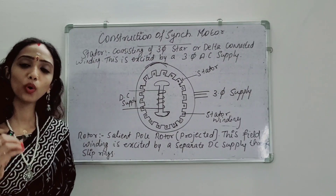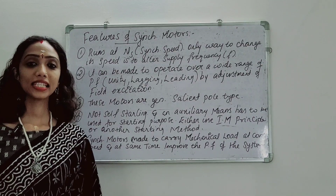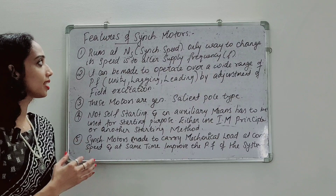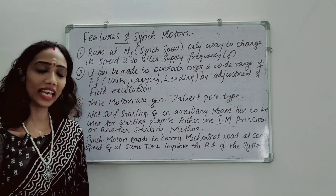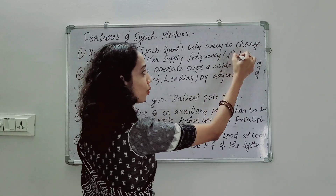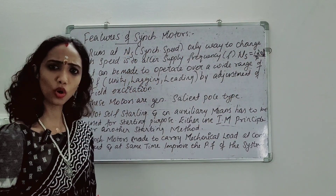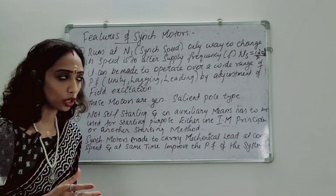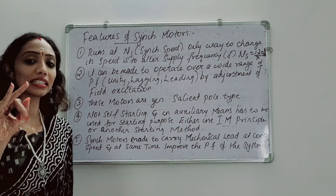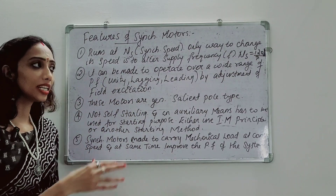Now, what are the features of Synchronous Motors? First, a Synchronous Motor runs at synchronous speed — it is not variable speed. The only way to change its speed is to alter the supply frequency f. Second, it can be made to operate over a wide range of power factor — unity power factor, lagging power factor, and leading power factor — by adjustment of field excitation.